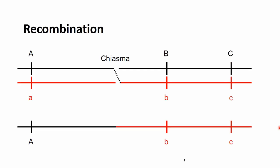This graph is also from last time. We have an individual here and there is a recombination event, and the previous capital A, capital B, and capital C haplotype is changing to capital A, lowercase b, and lowercase c haplotype because of this recombination event.